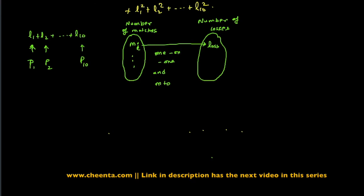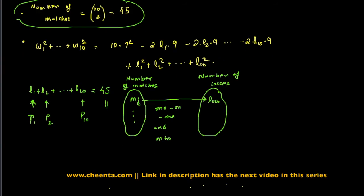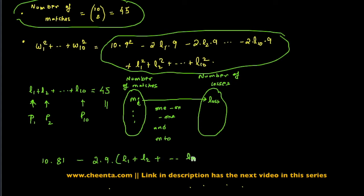So anyway, the point is that since we have found the number of matches is equal to the number of losses, therefore this sum is clearly 45, which we found earlier is the number of matches. So L1 up to L10 adds up to 45.